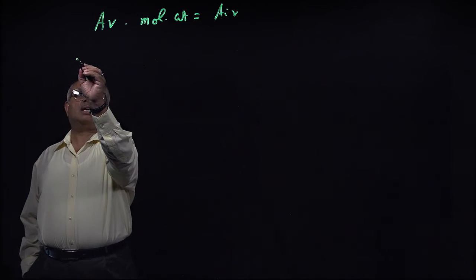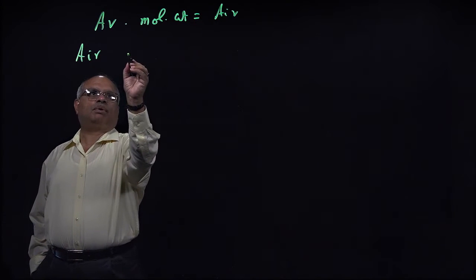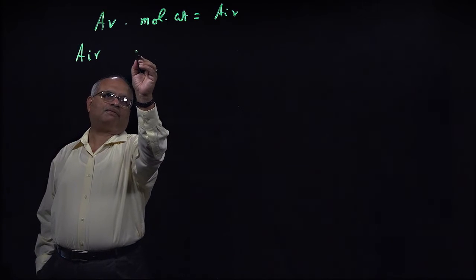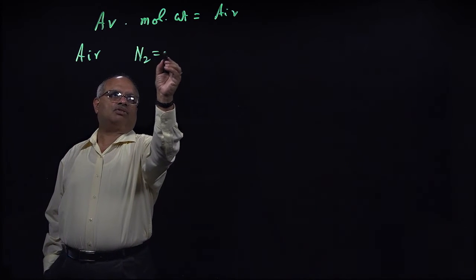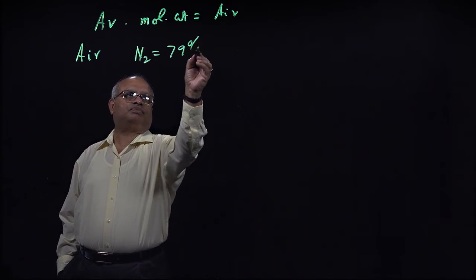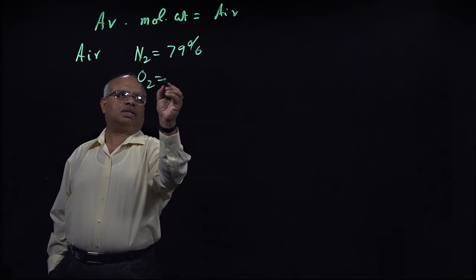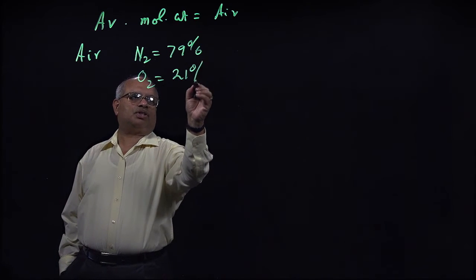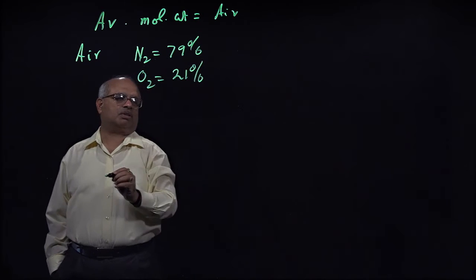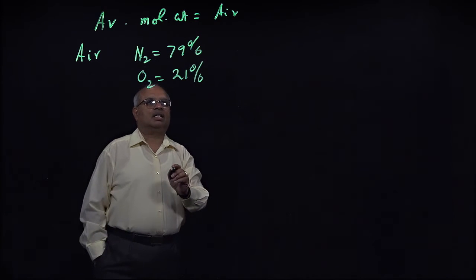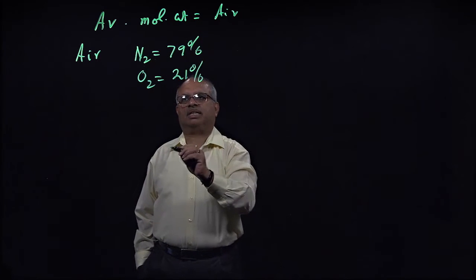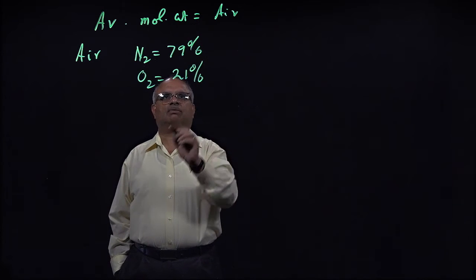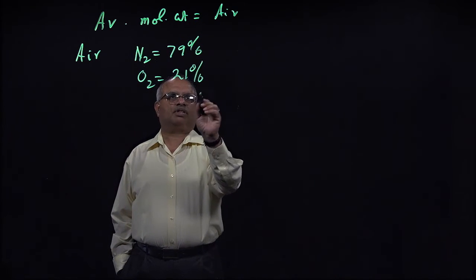We all know that air is composed of roughly nitrogen 79% and O2 is 21%. We should remember that O2 is not 21 precisely, but we would use this approximate composition and try to figure out what is the average molecular weight.